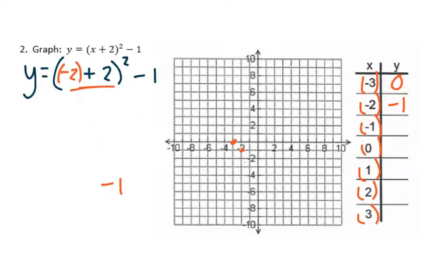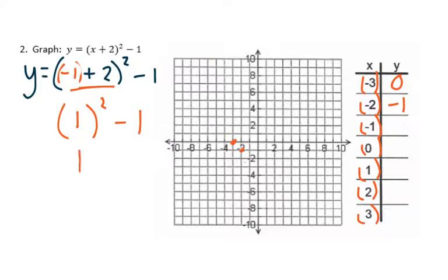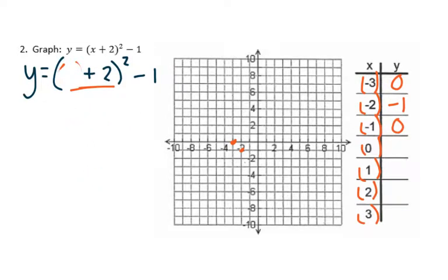Continuing our order of operations, we plug in negative 1. Negative 1 plus 2 gives us 1. That 1 is still being squared, and we subtract 1. 1 squared is 1, and 1 minus 1 goes back to 0. Then, plugging in 0: 0 plus 2 is 2. 2 squared minus 1 is 4 minus 1, or 3.